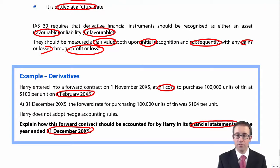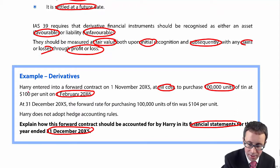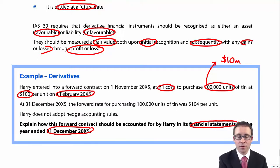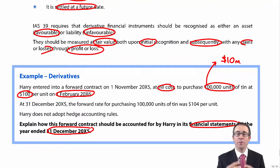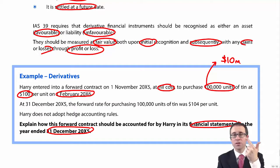The contract is to purchase 100,000 units of tin at $100 per unit on the 1st of February 20X6, so it will be settled at some point in the future. The value of the forward contract will change as the price of tin fluctuates — it could go up or down. This satisfies all three criteria: the value changes in response to price, there is nil cost at inception, and it is settled in the future. It is therefore a derivative.